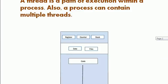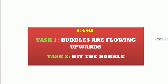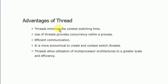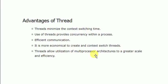So basically a thread is a lightweight process. These are certain advantages of threads: threads minimize the context switching time; use of threads provides concurrency within a process; efficient communication; it is more economical to create and context switch with threads; and threads allow utilization of multiprocessor architectures to a greater scale and efficiency.